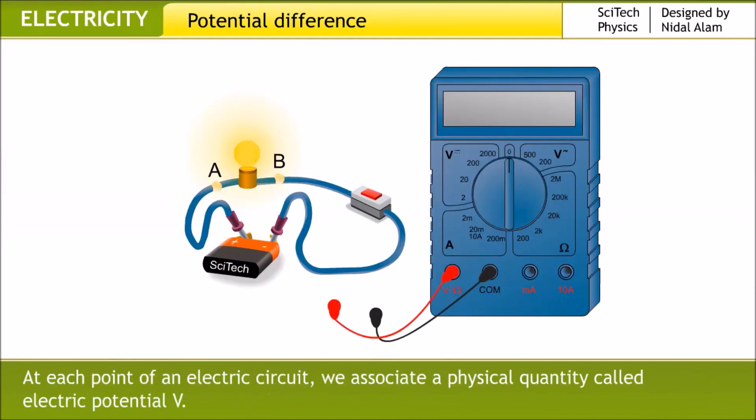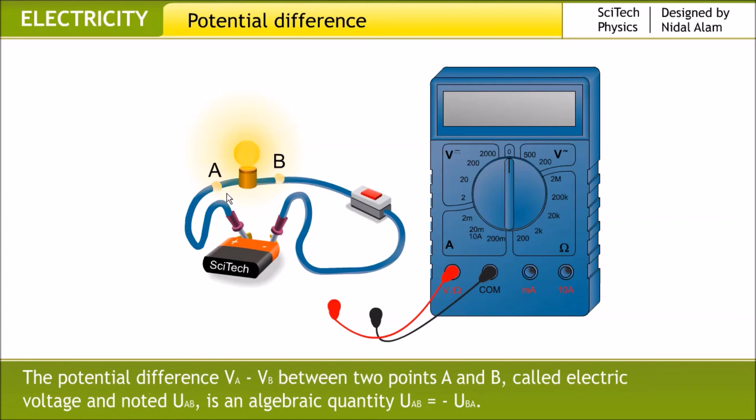At each point of an electric circuit, we associate a physical quantity called electric potential V. The potential difference VA minus VB between two points A and B, called electric voltage and noted UAB, is an algebraic quantity where UAB equals minus UBA.